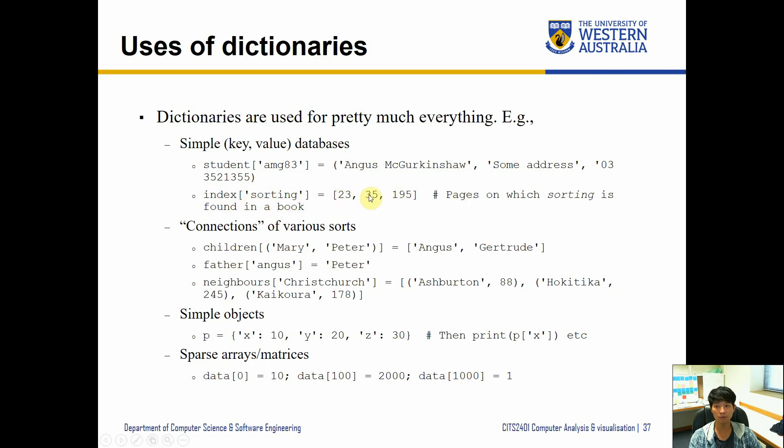Or sorting, maybe some values, pages on which sorting is found in a book. So you can have some word associated with the pages that they appear, so it's kind of like a glossary of words. And the appearance on different pages can be useful.